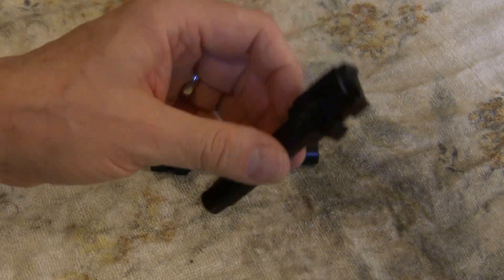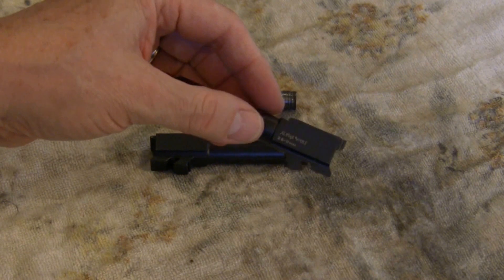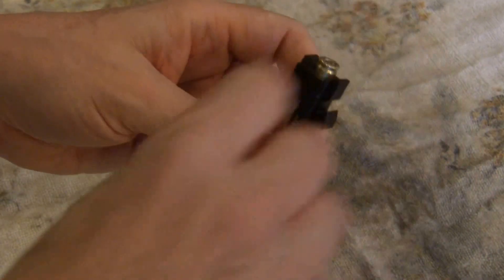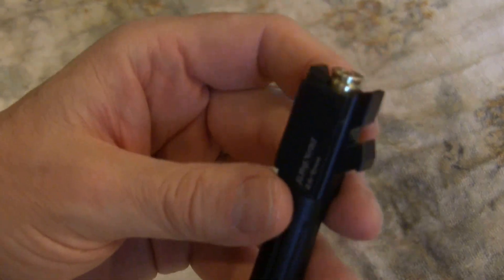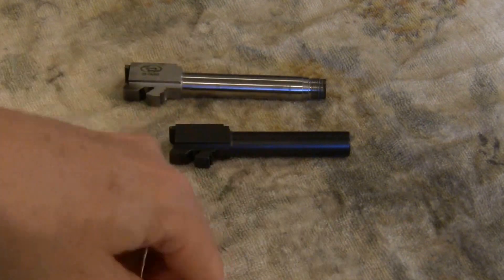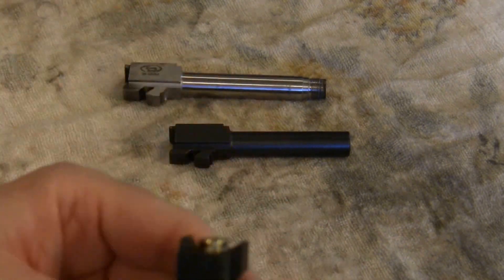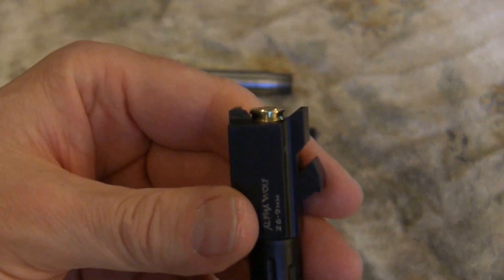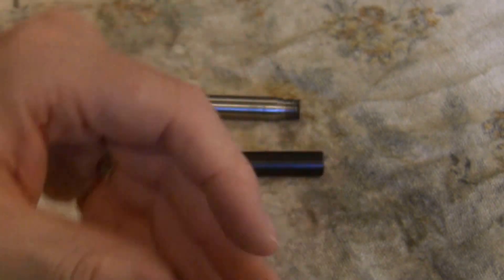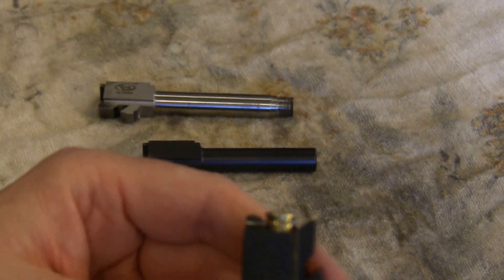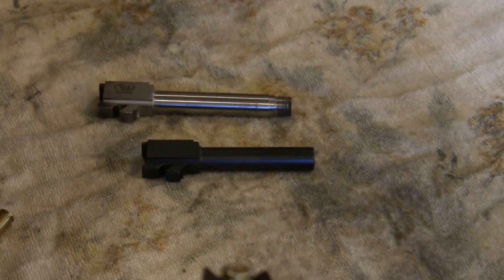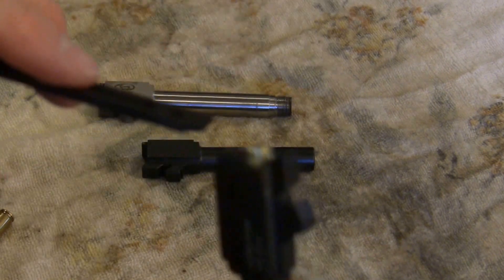However, completely different story with this Alpha Wolf barrel. I'll show you. That's as far down as it seats, where it should seat is like so. But that's as far down as it goes, and if I push on it that's as far down as I can get it. I actually have to use a tool to get it out.